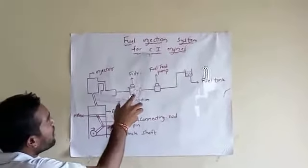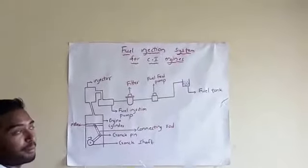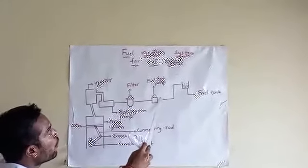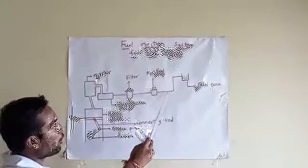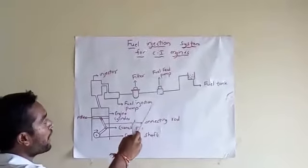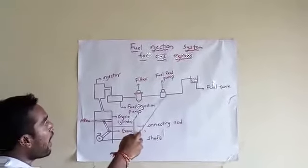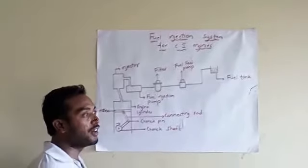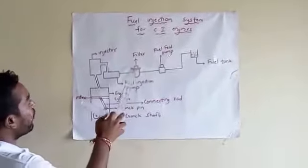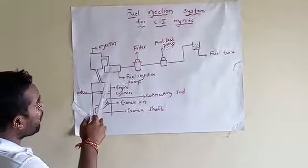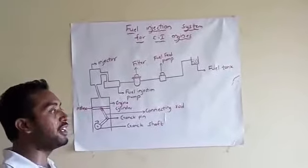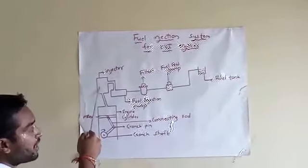Now I am explaining about the fuel injection system for IC engines and how the process takes place. First of all, fuel from the fuel tank is sent to the fuel feed pump at low pressure, where the fuel feed pump increases the pressure and sends it to the filter, where dust particles and mined particles are filtered from the fuel. Then the fuel is sent to the injection pump, which again increases the pressure and sends it to the injector.